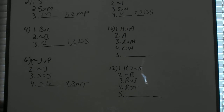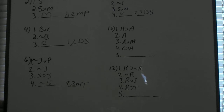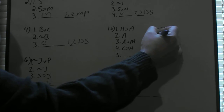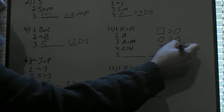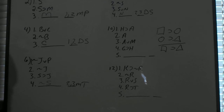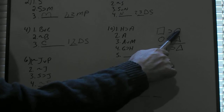For number 10, we have 'if H then A,' 'A,' 'A or M,' and 'G then H.' Lines 1 and 2 won't work — that would be the fallacy of affirming the consequent. Lines 1 and 3 won't work because you can't combine a horseshoe with a wedge in any of our four forms. The pattern for hypothetical syllogism is: if square then circle, if circle then triangle, therefore if square then triangle.